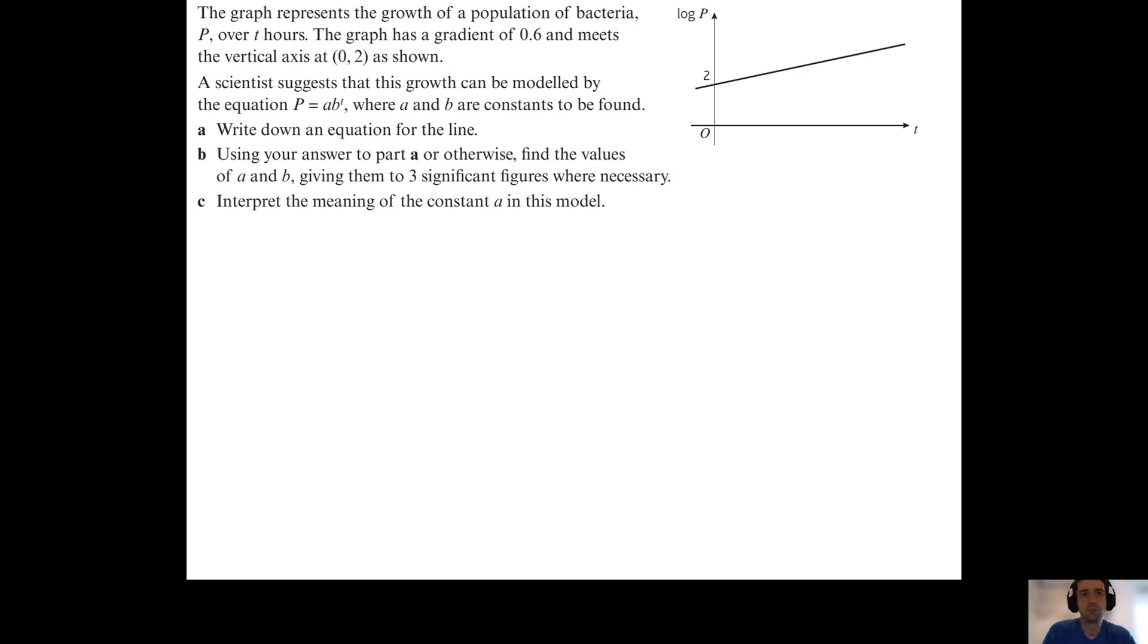So here we go. The graph represents the growth of a population of bacteria p over t hours. The graph has a gradient of 0.6 and meets the vertical axis at 0.2 as shown.